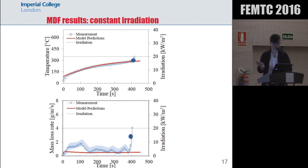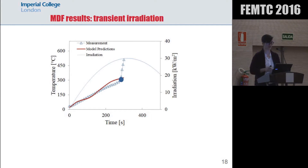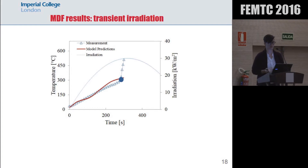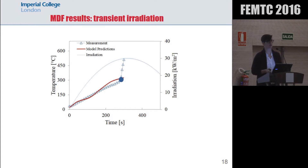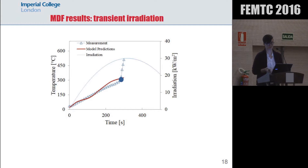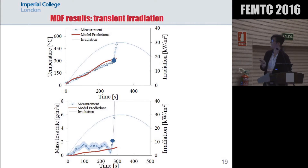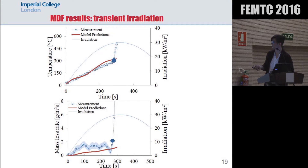We were happy with the constant results, so we went on to the transient case. Where again, the model slightly over-predicts — in this case it over-predicts the measurement right before ignition. I repeat, we didn't look at behavior after ignition occurred, so we didn't look at burning at all — we just looked at pyrolysis prior to ignition. And for mass loss rate, it is quite under-predicted for the transient case.